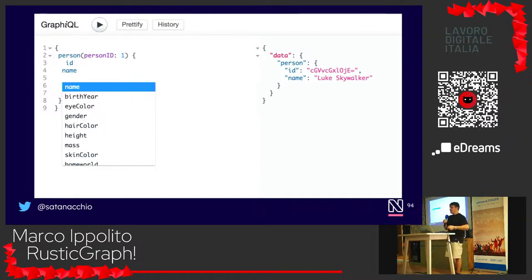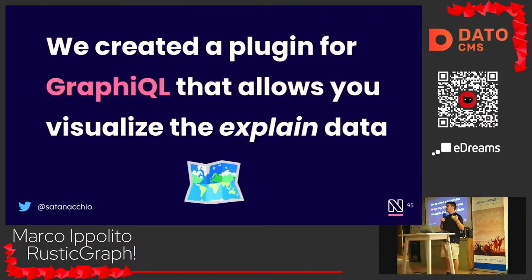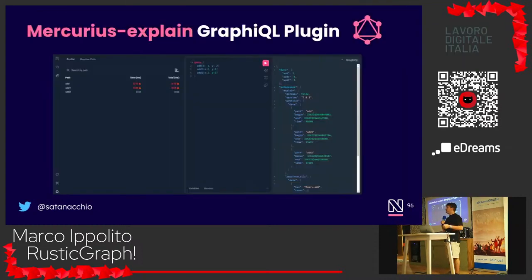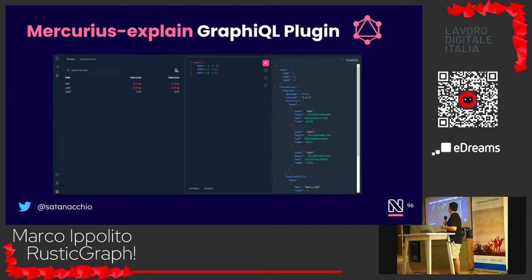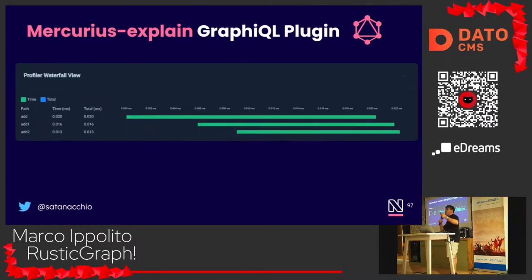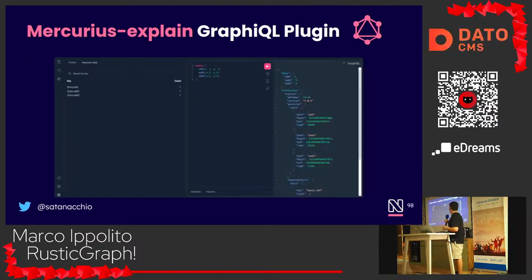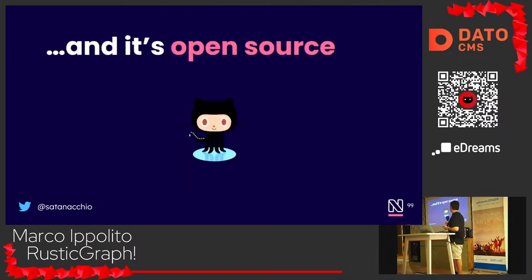You can see all the fields and everything. And with that, we created a plugin for GraphQL that lets you see performance data from the front-end. You have every path on the left side with the time for each path, a waterfall view — because we all love waterfall on Chrome DevTools — and the resolver count showing how many times each resolver has been called. It's open source.